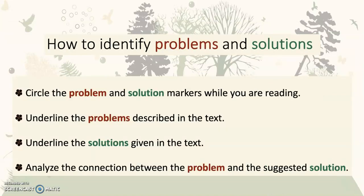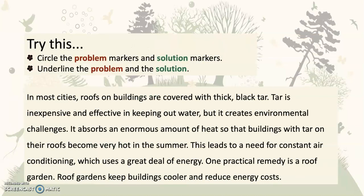So, how can you identify problems and solutions in a text? Circle the problem and solution markers while you are reading. Underline the problems described in the text. Underline the solutions given in the text. And then analyze the connection between the problem and the suggested solution. Try this — I'm going to circle the problem markers and the solution markers, and we're going to underline the problem and the solution.